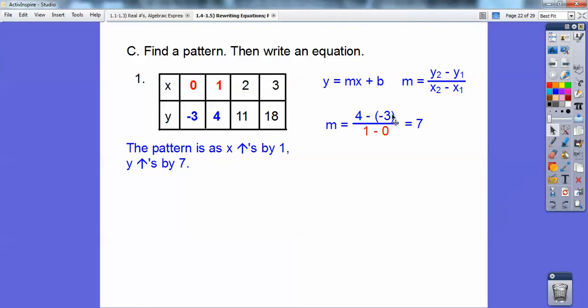And the slope is y2 - y1 over x2 - x1. And look, it's 7. Look, it's 7. Look, it's 7. Look, it's the same as the pattern. As x went up by 1, y went up by 7. So my slope is 7. So now I know this: y = 7x + b.